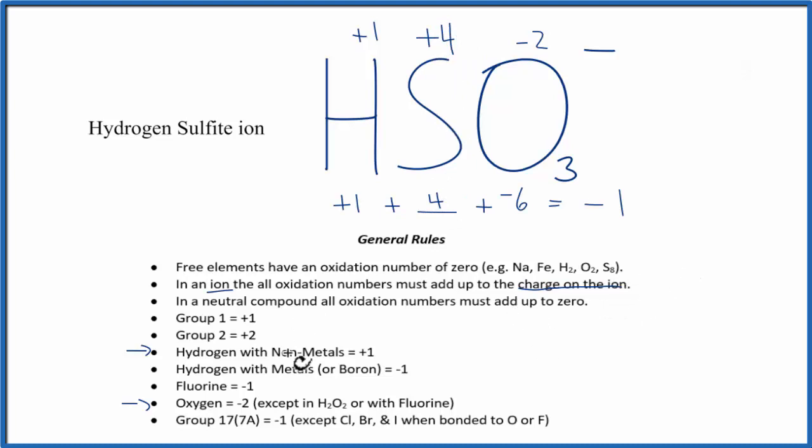So to recap, we use these rules here to figure out the elements that we knew, the hydrogen and then the oxygens. And then that, along with the charge on the entire ion, we can figure out the oxidation number on the sulfur here, which is plus four.